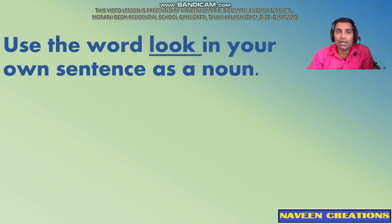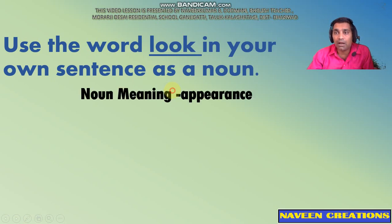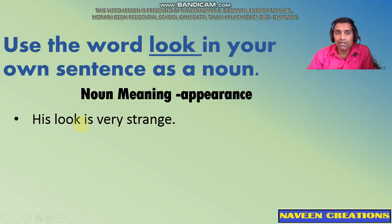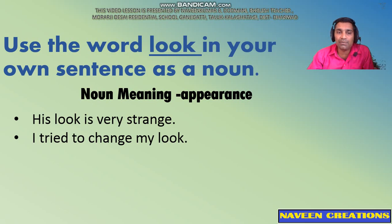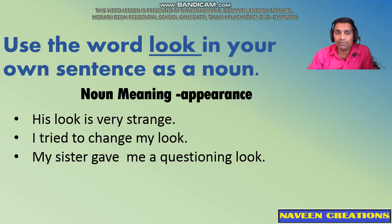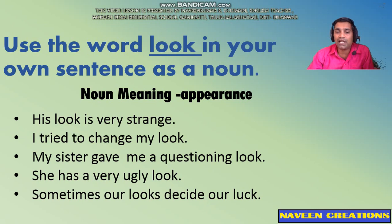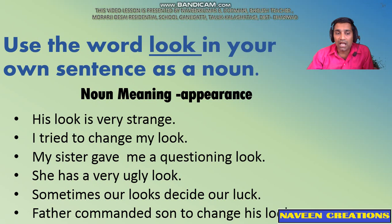The next word I have taken as an example is 'look.' The question will be: Use the word look in your own sentence as a noun. The noun meaning of look is 'appearance.' Examples: His look is very strange. I tried to change my look. My sister gave me a questioning look. She has a very ugly look. Sometimes our looks decide our luck. Father commanded his son to change his look. All these examples clearly show how we can frame sentences using the word look as a noun.